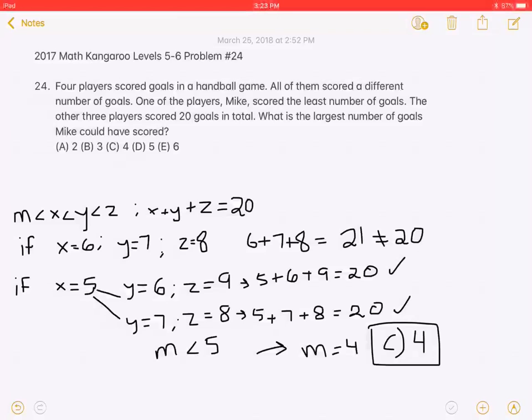The other three players scored 20 goals in total. What is the largest number of goals Mike could have scored? A, 2, B, 3, C, 4, D, 5, or E, 6.